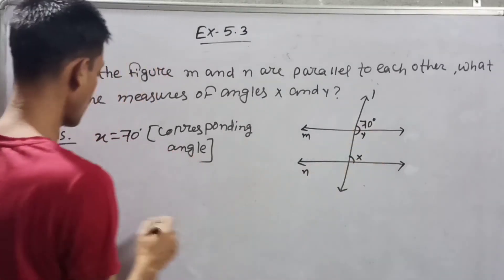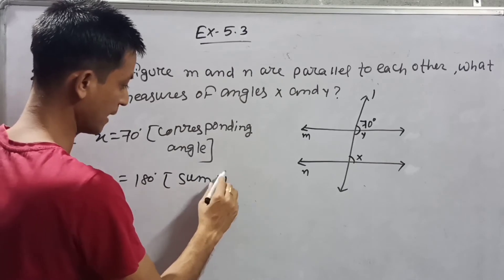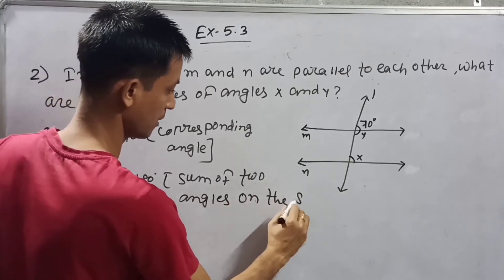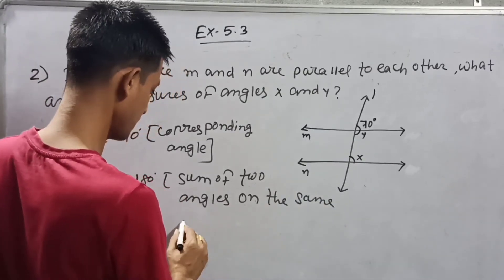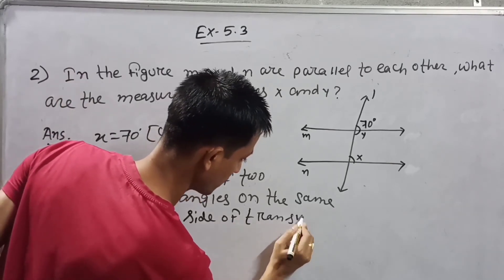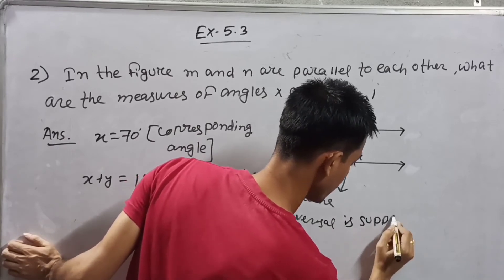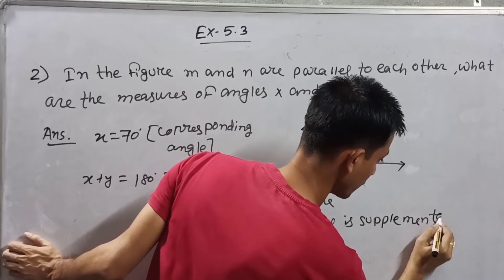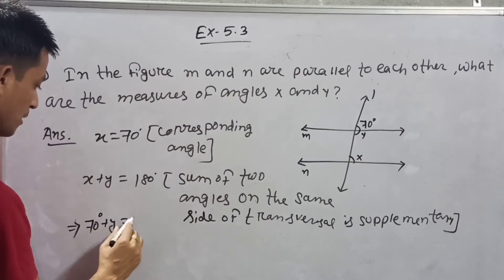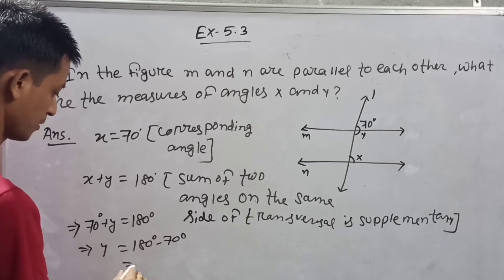Now X plus Y equals 180 degrees. The sum of two co-interior angles on the same side of the transversal is supplementary. So 70 degrees plus Y equals 180 degrees. Therefore Y is equal to 180 minus 70, which equals 110 degrees.